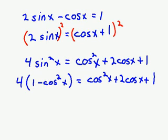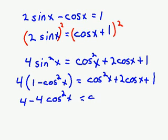Let's multiply out the 4. Get 4 minus 4 cosine squared x equals cosine squared x plus 2 cosine x plus 1.